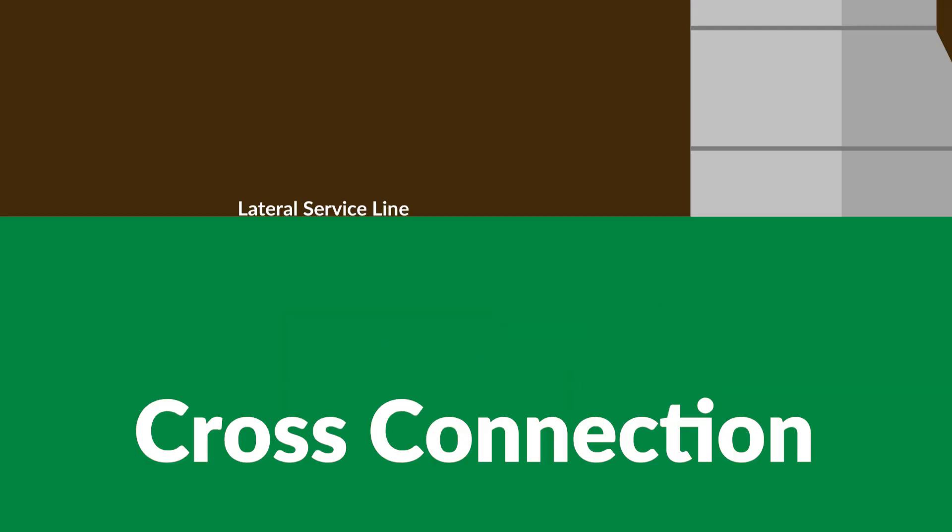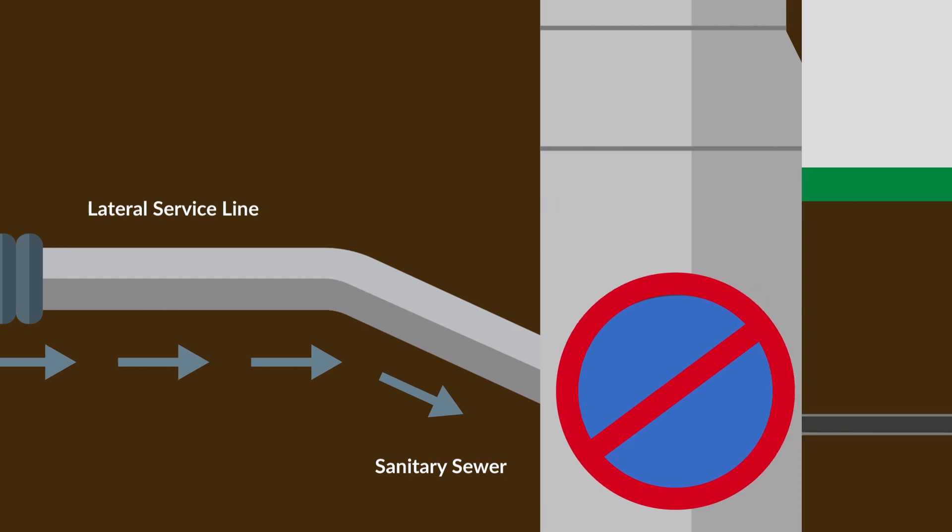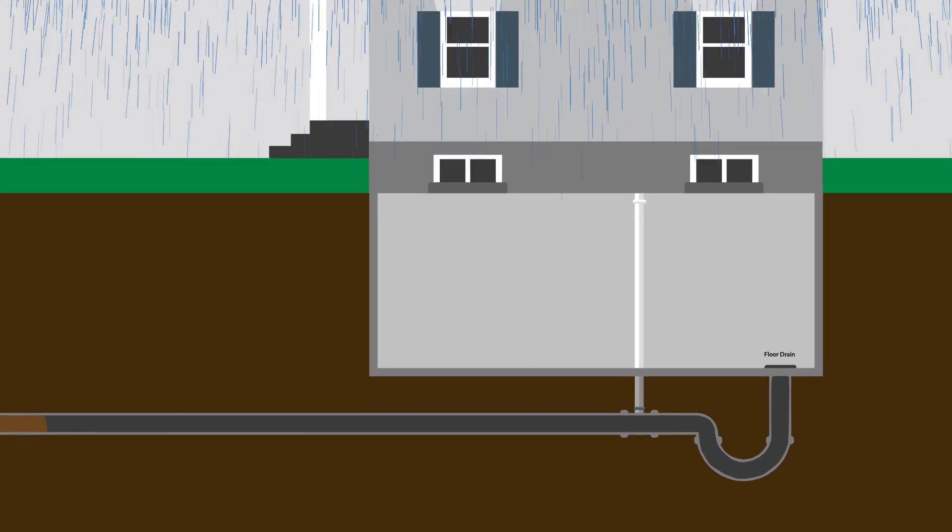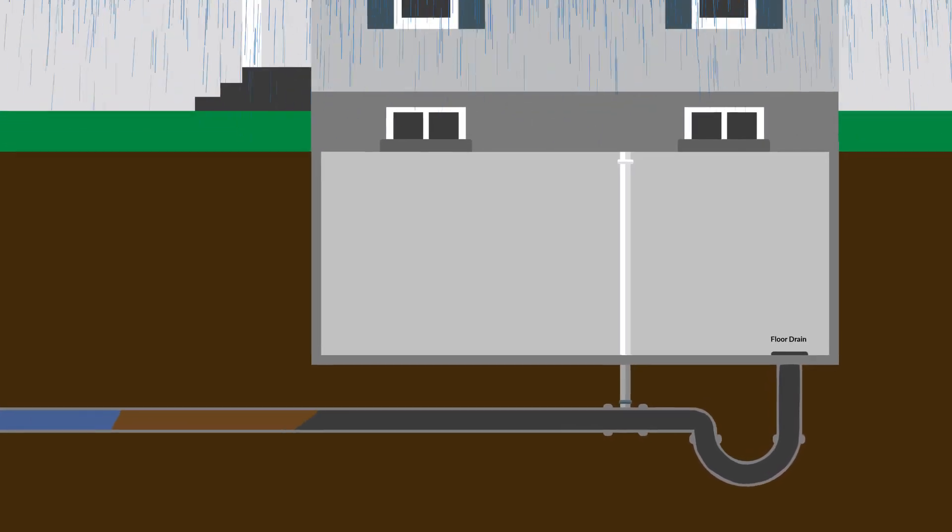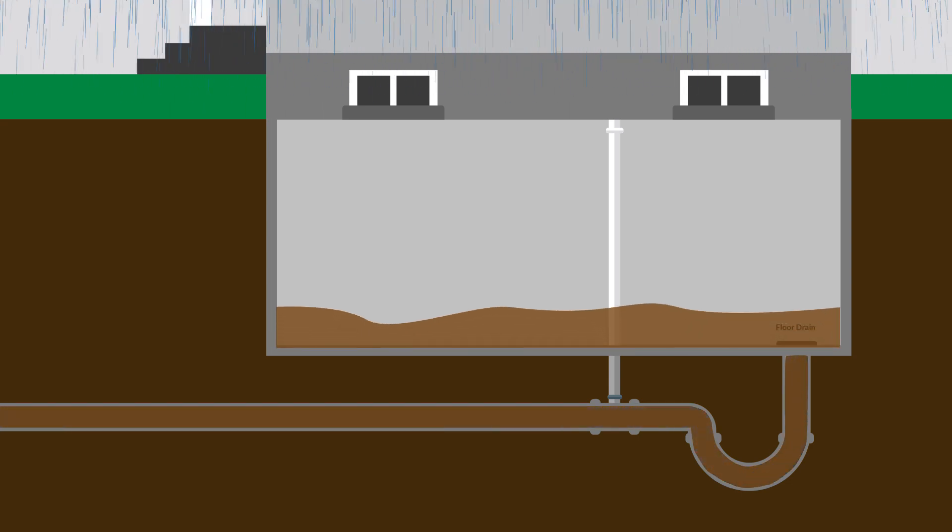This causes problems for other homeowners as the sanitary sewer system is not designed to take on stormwater. And when we have significant rainfall over a short period of time, excess water from illegally connected sump pumps causes raw sewage to back up into the basements of some homes in Cedar Rapids.